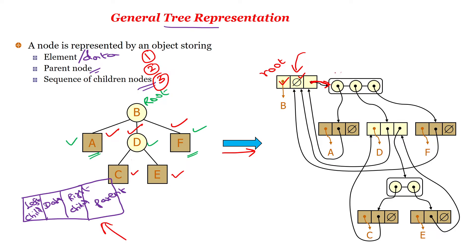Node B has three children, so the sequence of children has three child nodes: the first child is A, the second child is D, and the third child is F. Node A is created with three fields: the data field, the parent field pointing to B, and the child field. Since A has no children, the child field is made null.